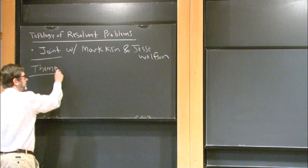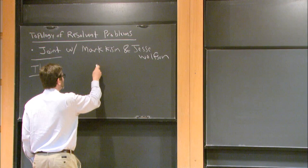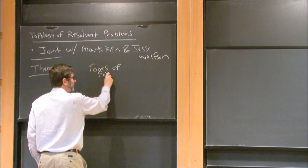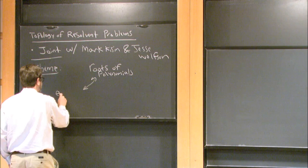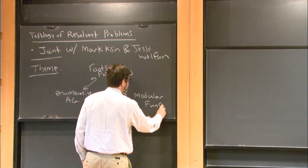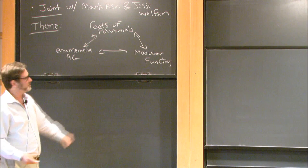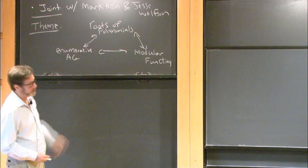One of the themes of the lecture — one big theme, and this is what's going to be more detailed today — is a kind of Klein worldview, the holistic worldview of Felix Klein, which is roots of polynomials, one-variable polynomials. And this amazing connection between that and enumerative algebraic geometry problems, and the theory of congruence covers — I'll just call it modular functions. These guys in the 1800s were solving polynomials using transcendental functions. Today I'm going to talk about a topological approach. This is joint with Mark Kissen and Jesse Wilson.